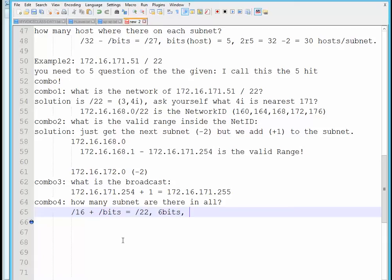So moving on. Two raised to six would give you, any guess please? Yeah, 64. We subtract two for the all hosts, for the all ones and the all zeros, giving you a total of 62 subnets total.